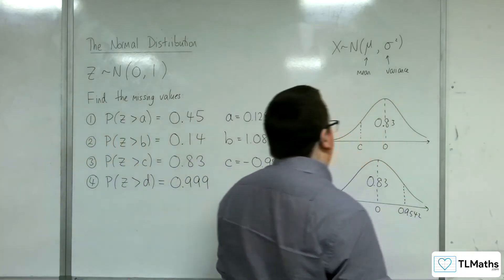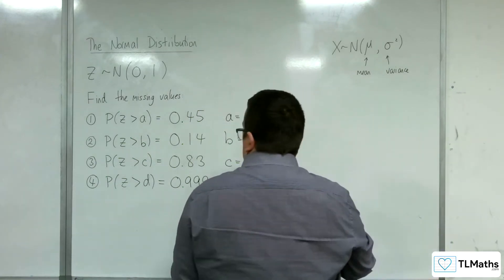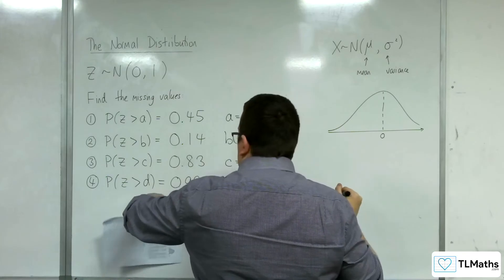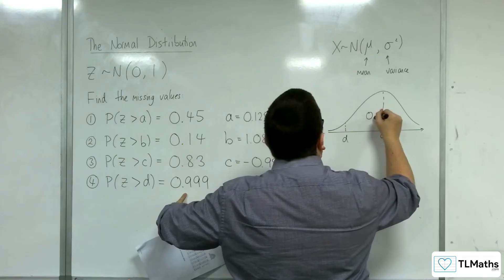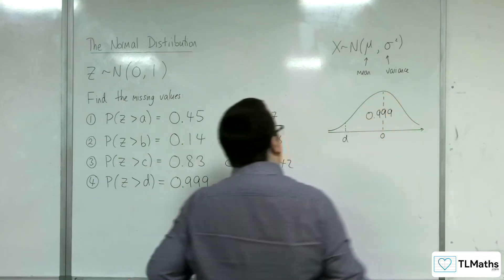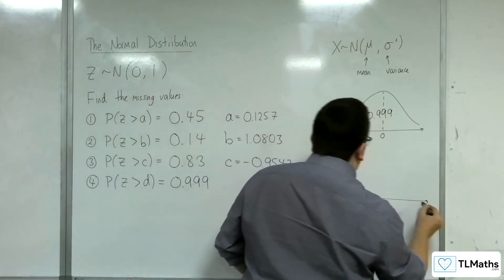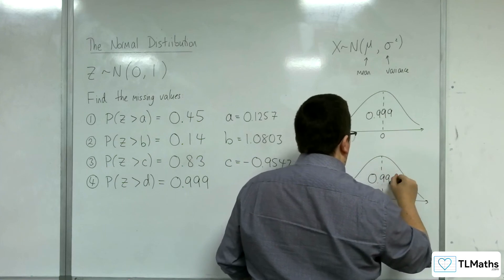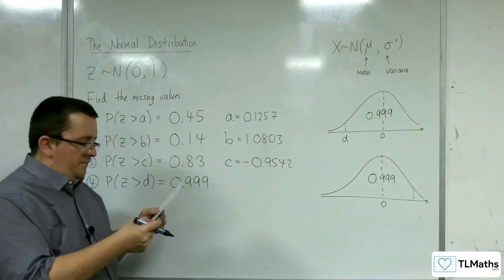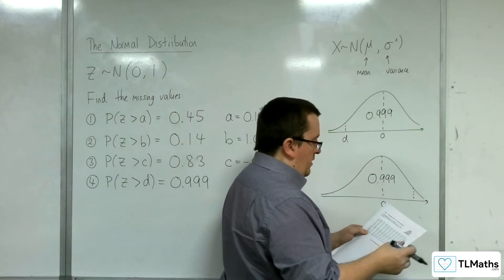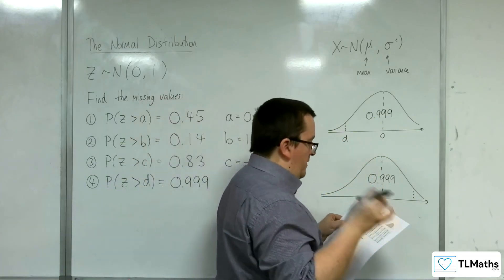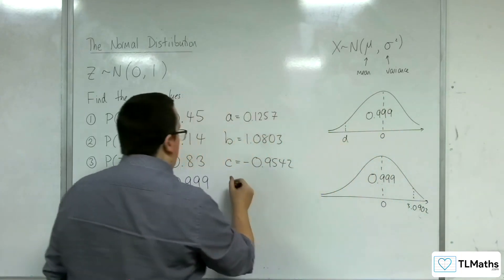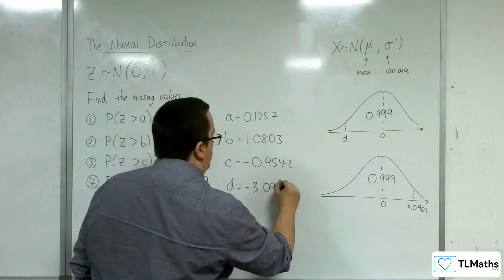Let's try number 4. There's 0. The probability to the right is 0.999, so d would have to be here for this to be 0.999. It's exactly the same situation as before — we're going to have to look at the mirror image. So looking up 0.999 in the tables: going to 0.99 down the left-hand side and along to 0.999, I get 3.0902. So if it's the mirror image, d has to be negative 3.0902.